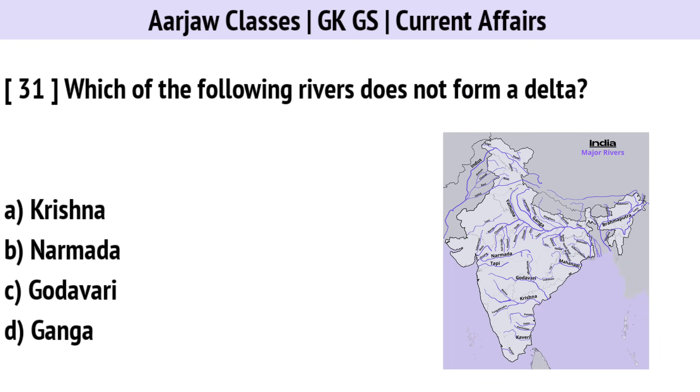Which of the following rivers does not form a delta? Correct option is B — Narmada River.